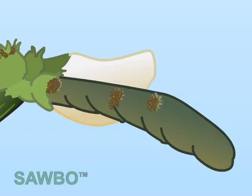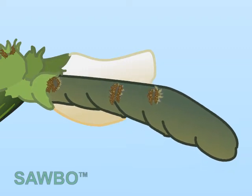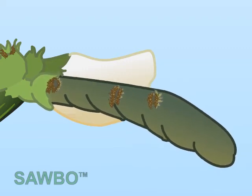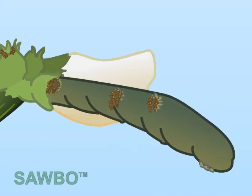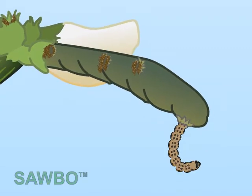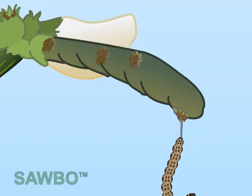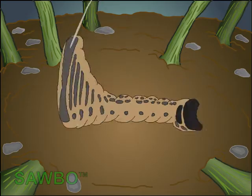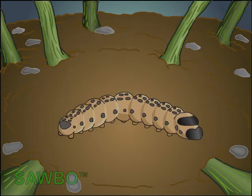Once completing the five larval stages during the 11th to 12th day, the caterpillar spins a silk thread and drops to the ground, transforming itself into a pupa.